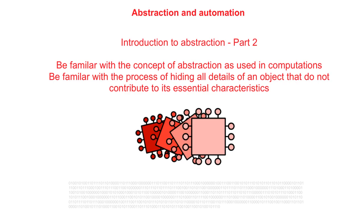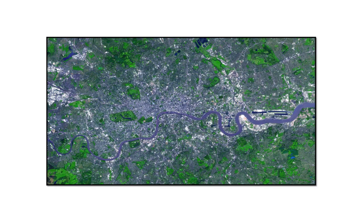In this second video on abstraction, we're going to explain a little bit more the need for abstraction before going into some of the more specific details in the videos that follow. There are often situations in life where we need to remove several layers of detail and highlight others in order to get at what we want.